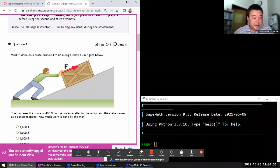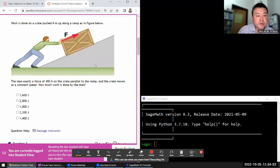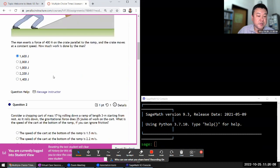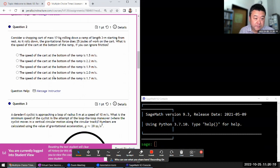Okay, it says work done on a crate, push it four meters up along. Exerts that force parallel to the ramp. That's good. Crate, so four times 400, 1600 joules. So they gave us easy numbers because displacement and force are in the same direction.